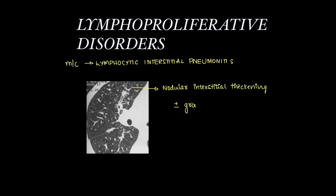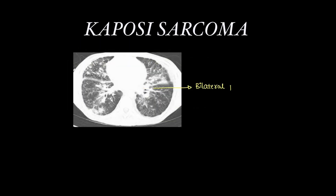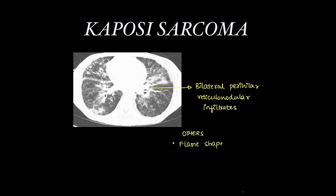Kaposi sarcoma imaging findings include bilateral perihilar reticulonodular infiltrates, flame-shaped nodules, and hemorrhagic pleural effusion.